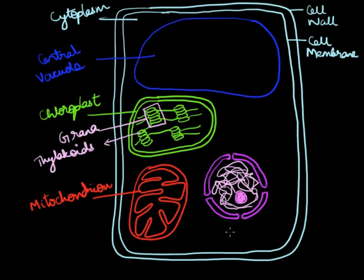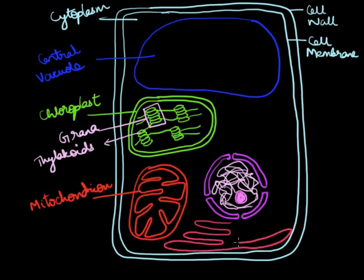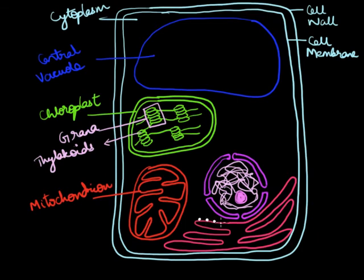The next step is to draw the endoplasmic reticulum, which is basically a large network of membranes. Sometimes it is continuous with the nuclear membrane, but here I am not drawing it like that. Just draw some folded lines. The endoplasmic reticulum is of two types: smooth and rough. The rough type has ribosomes attached to its surface.